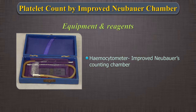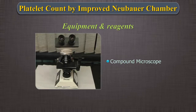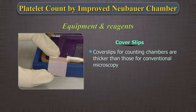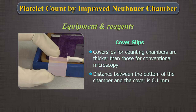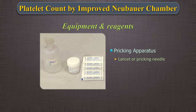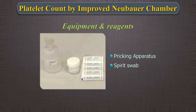Equipment and reagents: 1. Hemocytometer. 2. Compound microscope. Ideally, platelet counts should be done using phase contrast microscopy; however, we are discussing ordinary bright field microscopy here. 3. Cover slips — cover slips for counting chambers are specially made and are thicker than those for conventional microscopy. They are designed so that the distance between the bottom of the chamber and the cover is 0.1 mm. 4. Pricking apparatus comprising lancet, pricking needle, syringe needle, or evacuated tubes. 5. Spirit swab.